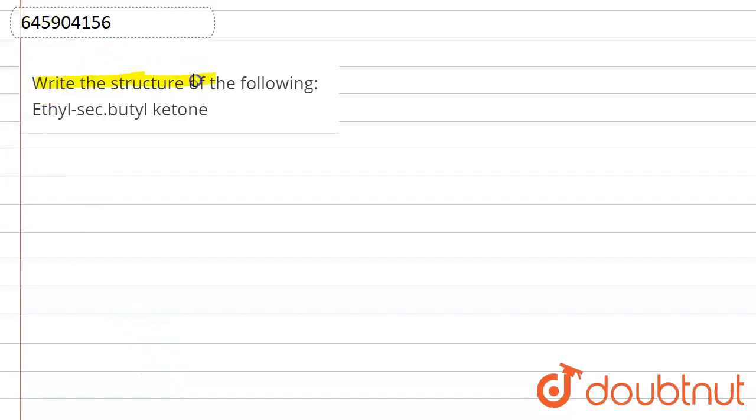Write the structure of the following: ethyl secondary butyl ketone. So first of all, what is ketone? Ketone means C double bond O, and in that carbon, on both sides, alkyl groups will be present.